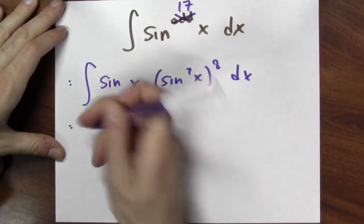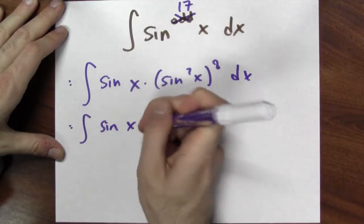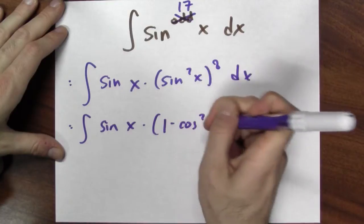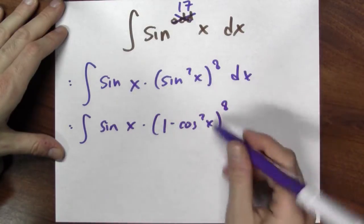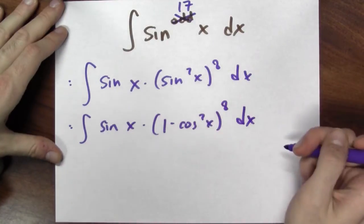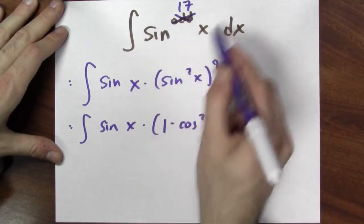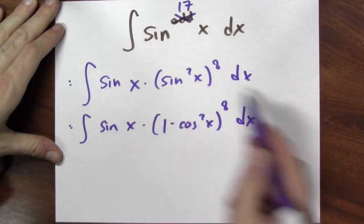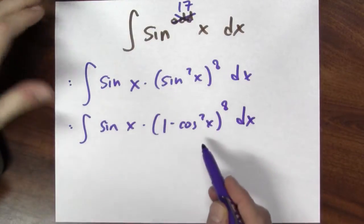Now I can trade sine squared for some cosines, right? That sine squared is 1 minus cosine squared to the eighth power. So if I can do this anti-differentiation problem, all I need to do is to do this anti-differentiation problem. And I can do that with a substitution.